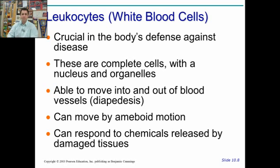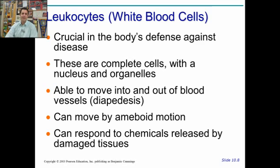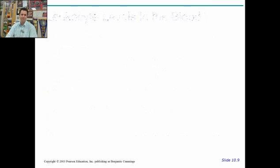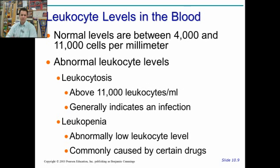They move by amoeboid motion and respond to chemicals that damaged tissues release into the fluid, to recruit more white blood cells. There are normally between 4,000 and 11,000 cells per millimeter — not very many. But when you have an infection, those levels rise. If they rise above 11,000, it means you have an infection. It's the primary way to determine if there's an ongoing infection, maybe one you don't even know about.